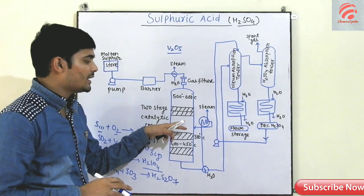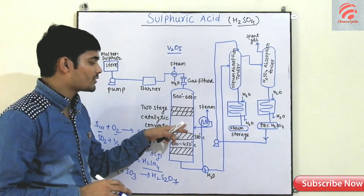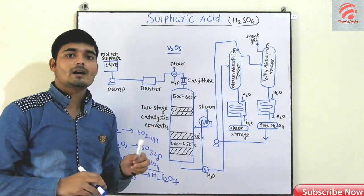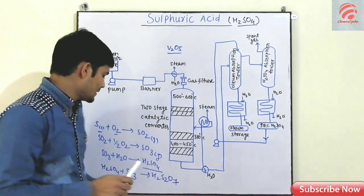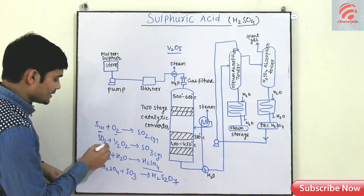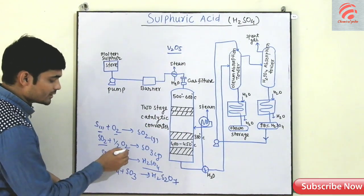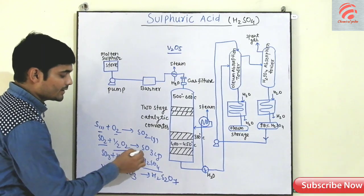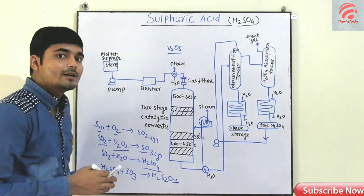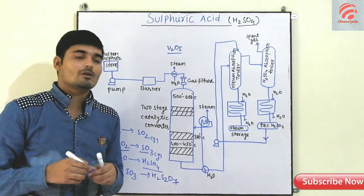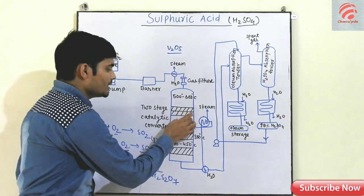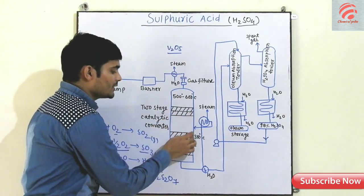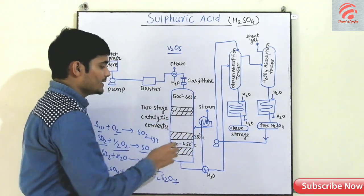When sulfur dioxide reacts with oxygen, we can see that sulfur dioxide and oxygen combine to form sulfur trioxide, SO3.